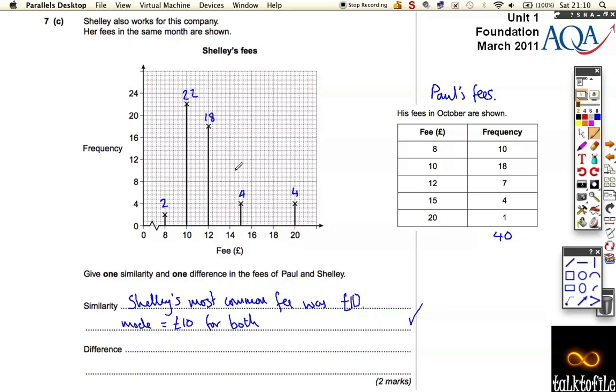So when I added that up, that came to 40, 44, 48, 50. So I found out that Shelly got 50 fees in October. Paul got only 40 fees.